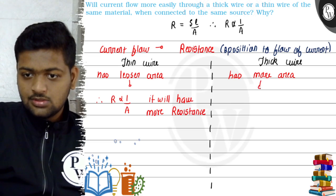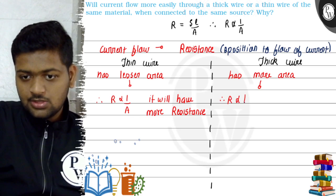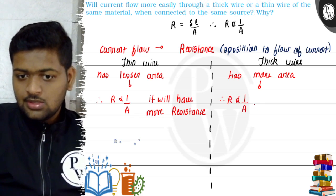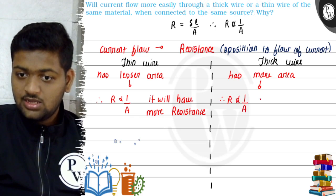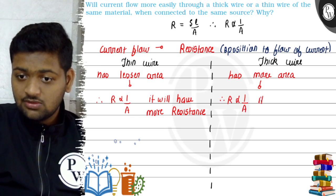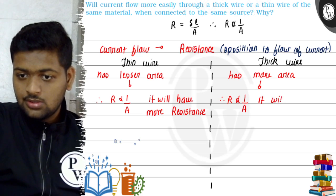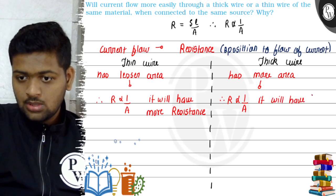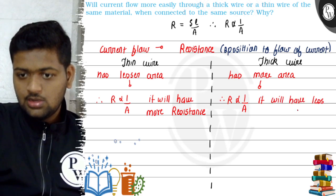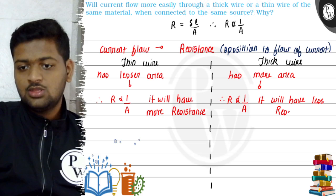And since it is inversely proportional, since it has more area it will have lesser resistance, less resistance as compared to the thin wire.